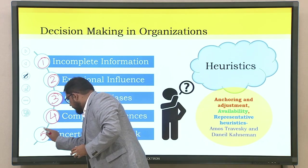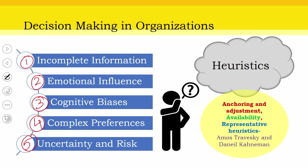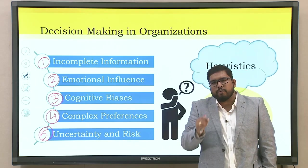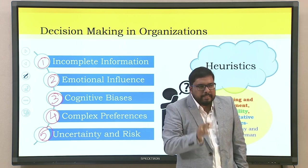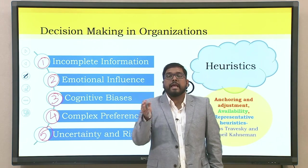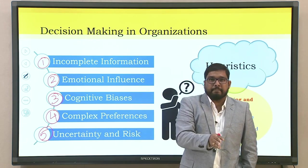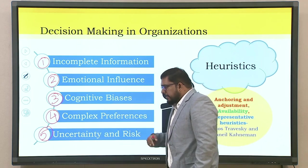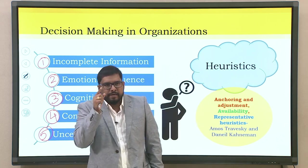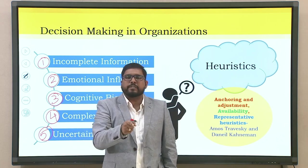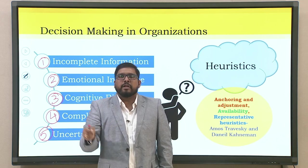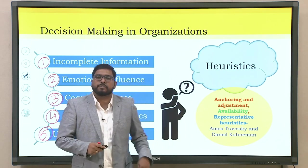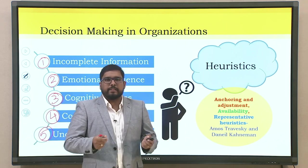The fifth aspect is uncertainty and risk. Every single organization — not just startups — always works under the pretense that there is a certain level of uncertainty associated at every moment in time. The individual or committee at the helm making decisions should consider the uncertainty and risk associated with those decisions within the organization.